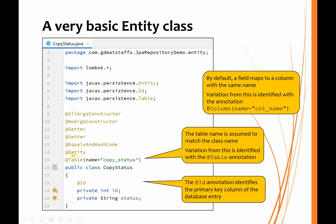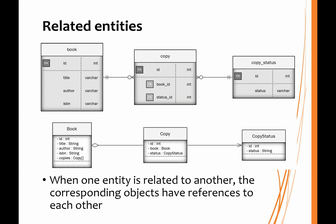We identify the class as an entity, we identify the table that it maps, we identify the primary key field, and we make sure that we have fields for each of the columns in the table that we're mapping to. Let's take a look at this example from the previous video. We have these three database tables: book, copy, and copy status, with one-to-many relationships between book and copy, and also copy status and copy. Here are the foreign keys in copy that implement those one-to-many relationships.